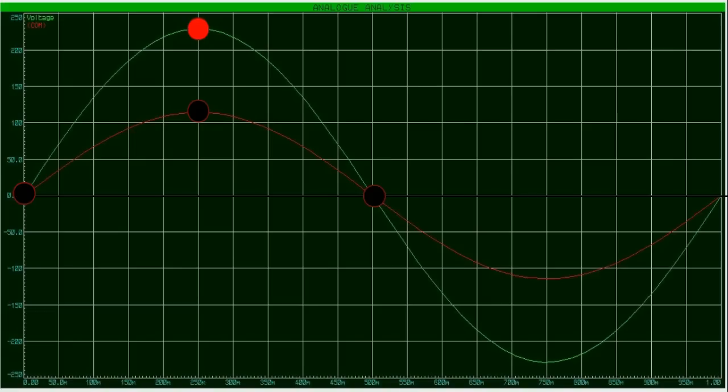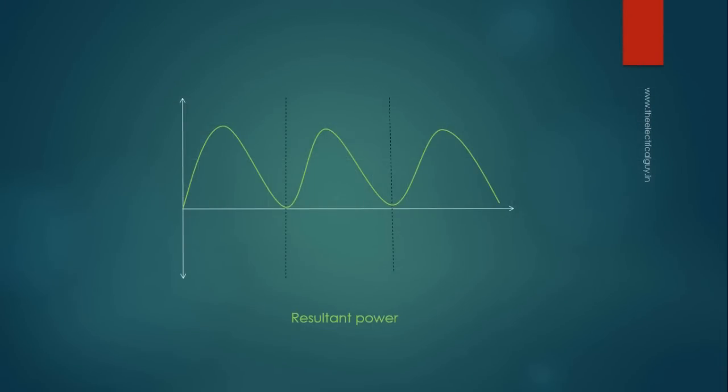Now to get the instantaneous power, I will simply multiply the voltage with current and the resultant power waveform will look like this. This point is my peak power point. That is, power at this point is highest.